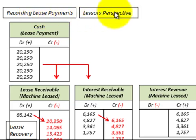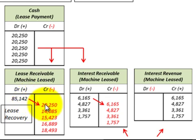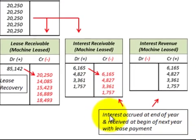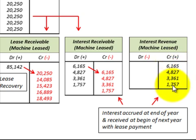Recording the lease payments from the lessor's perspective: cash received is debited for $20,250 each year. That payment is divided between the lease receivable reduction and interest receivable, both taken from the amortization schedule. Interest receivable is debited and then credited out, as interest is accrued at year-end and received at the beginning of the next year with the lease payments. Interest revenue is then recognized from the interest receivable for the amount per the amortization schedule.